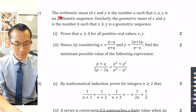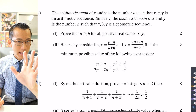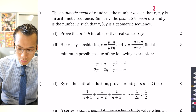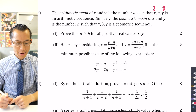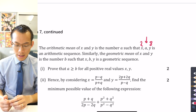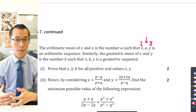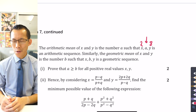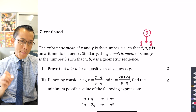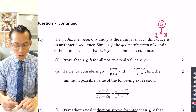The arithmetic mean of x and y is the number a such that x, a, y is an arithmetic sequence. Think about this: if I presented two numbers like two and eight, the arithmetic mean is the number you stick in between that gives a common difference all the way along. That number is five, giving a common difference of three. So five is the arithmetic mean of two and eight — what we'd normally call the average.